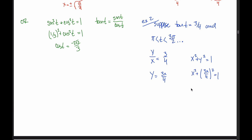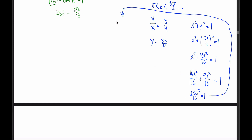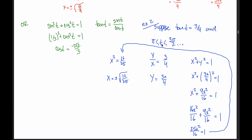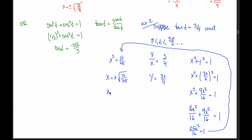Writing x² as 16x²/16 to get a common denominator: 16x²/16 + 9x²/16 = 25x²/16 = 1. Multiplying both sides by 16/25 gives x² = 16/25, so x = ±√(16/25). Since t is between π and 3π/2 — the third quadrant, down here on the left side — the x-coordinate is negative. So x = −4/5, because √16 = 4 and √25 = 5.